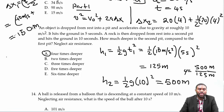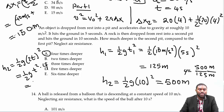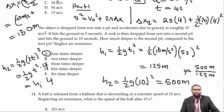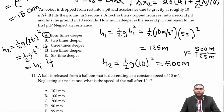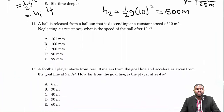A simpler method: H₂ equals half g (2T)² equals half g T² times 4 equals H₁ times 4. So H₂/H₁ equals 4 without any numerical computation.